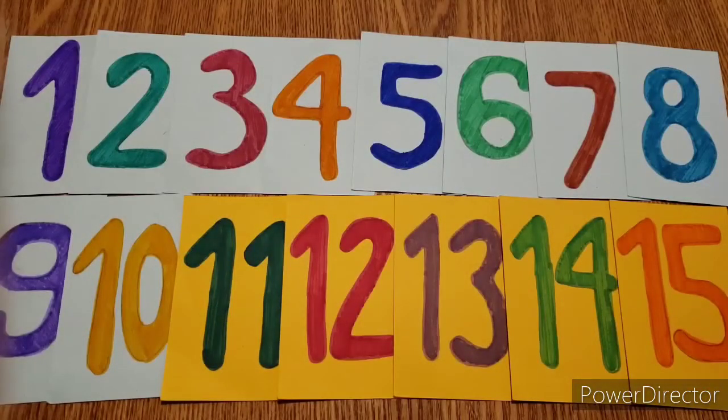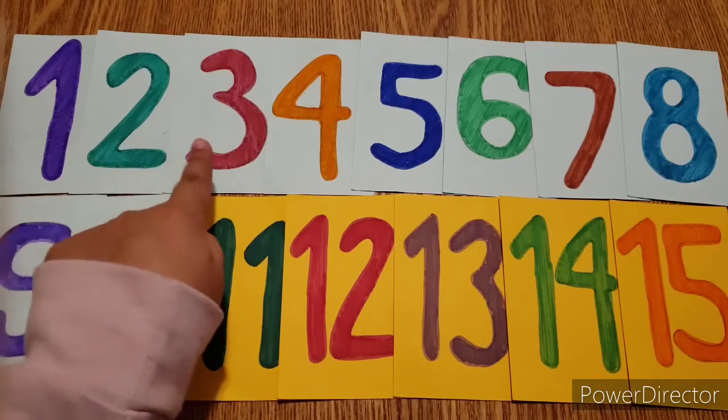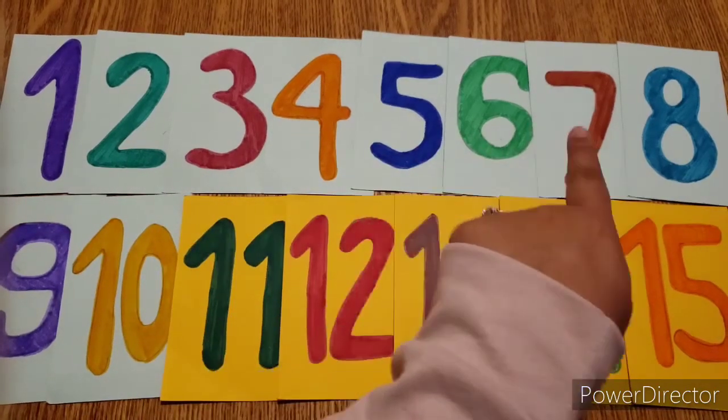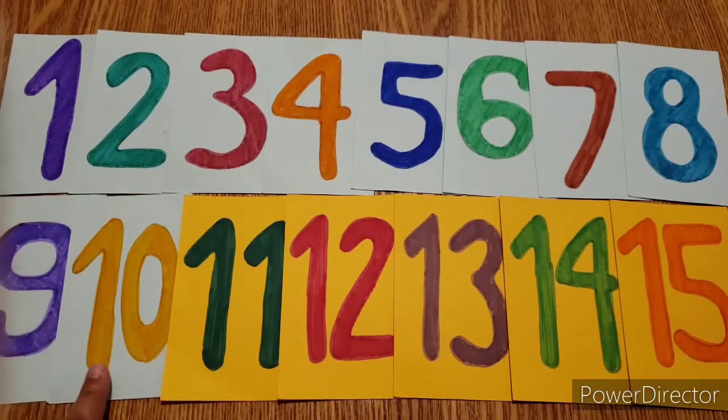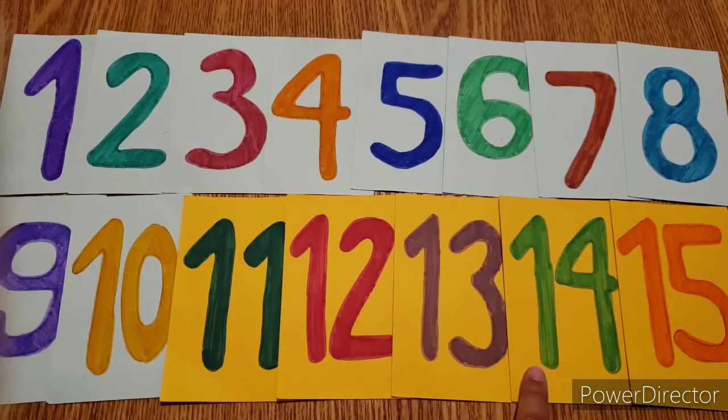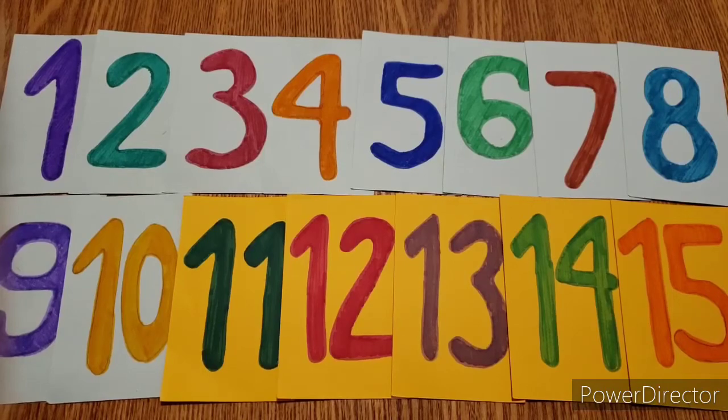Today we're going to get started with counting the numbers 1 through 15. So let's start. We have 1, 2, 3, 4, 5, 6, 7, 8, 9, 10, 11, 12, 13, 14, and 15. So those are the numbers from 1 through 15.